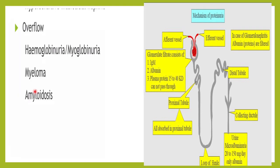Overflow proteinuria occurs because of overloaded protein — the kidney is neither able to absorb it nor filter it properly. This is seen in multiple myeloma, or if there is intravascular hemolysis such as hemoglobinuria, or if there is rhabdomyolysis, you will have myoglobinuria etc.